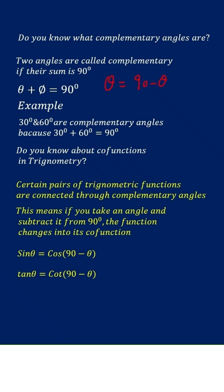This means if you take an angle and subtract it from 90, the function changes into its co-function. That function is called the co-function.